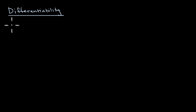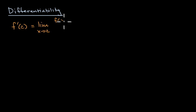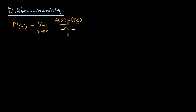Let's remind ourselves of the definition of a derivative. There are multiple ways of writing this, but for this video: the derivative of our function at point c — in Lagrange notation, f prime of c — is equal to the limit as x approaches c of f of x minus f of c, over x minus c.